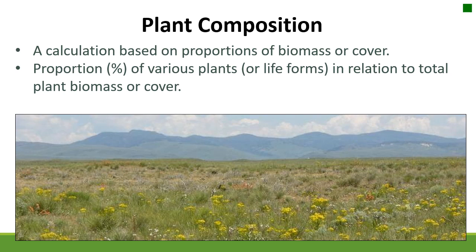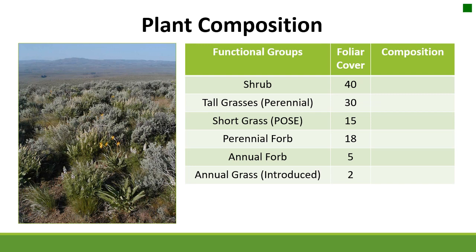Plant composition is another thing we often want to know on a landscape. Plant composition refers to the proportion of the community based on biomass or cover of various plants or life forms, depending on the questions you're asking. This is really important because it gives you an idea of dominance on the landscape and can help you plan management activities or measure whether you're actually moving in the right direction according to your objectives. We're going to calculate the plant composition for a hypothetical community with functional groups including shrubs, tall grasses, short grasses, perennial and annual forbs, and introduced annual grasses like cheatgrass.